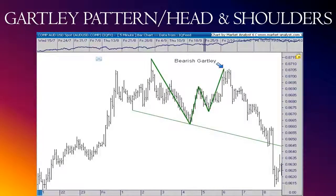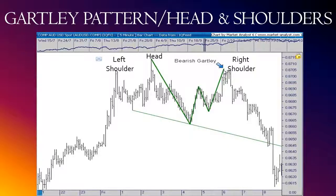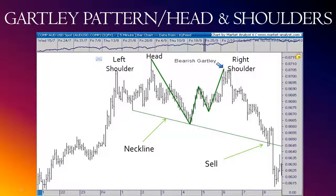It is also a head and shoulders pattern. This high would be the left shoulder, here's the head, and here is the right shoulder. A sell signal is generated when there's a break below the neckline, and that can be seen here. This head and shoulders trade would have worked out great as the market continued to decline after the break below the neckline. However, notice that our bearish Gartley signal was generated at a much higher level, showing the superiority of the Gartley pattern.